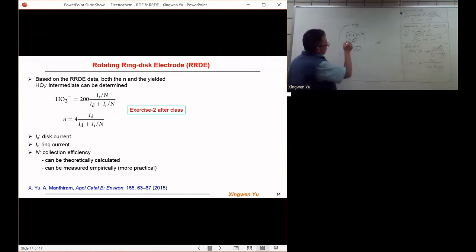Collection efficiency is when the intermediate species are spread out, because the ring only has a small thickness. So not all the intermediate species are spread onto the ring. Some stay here, some are not.